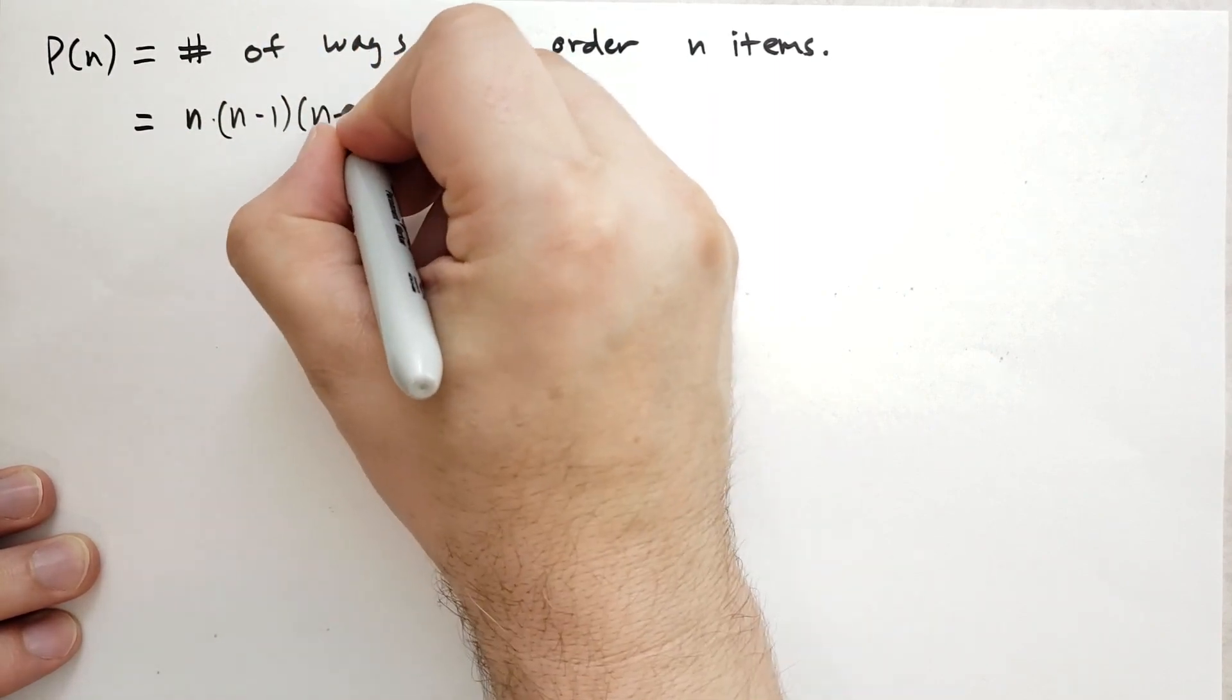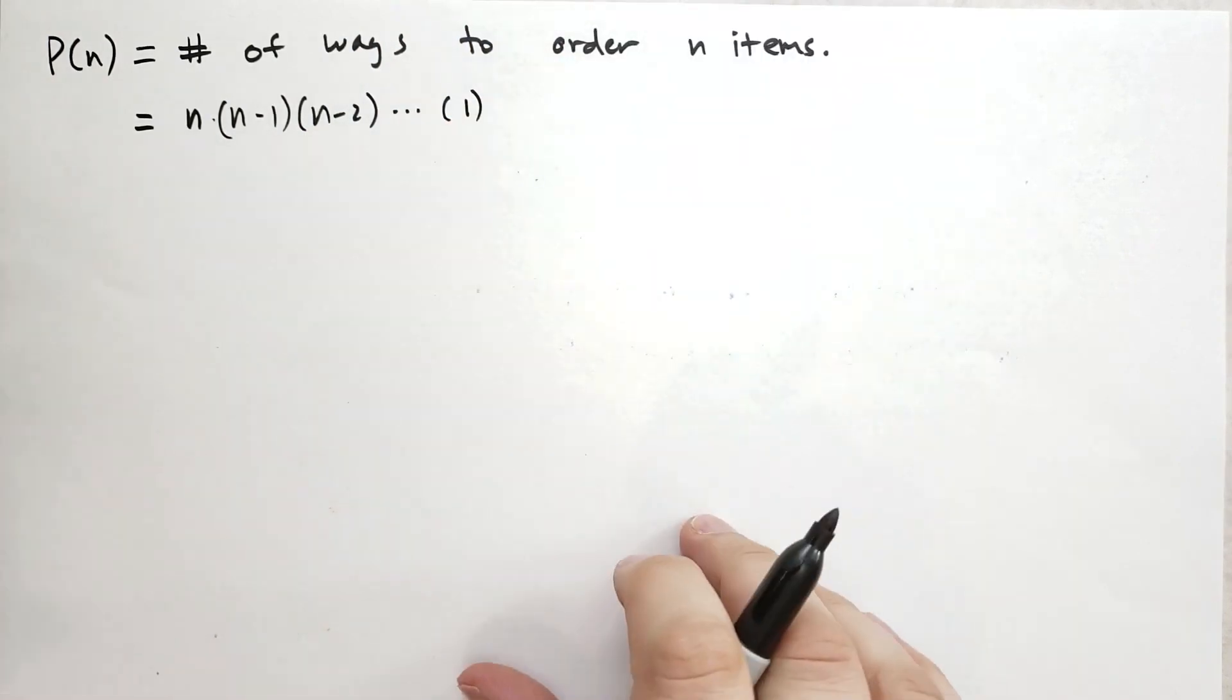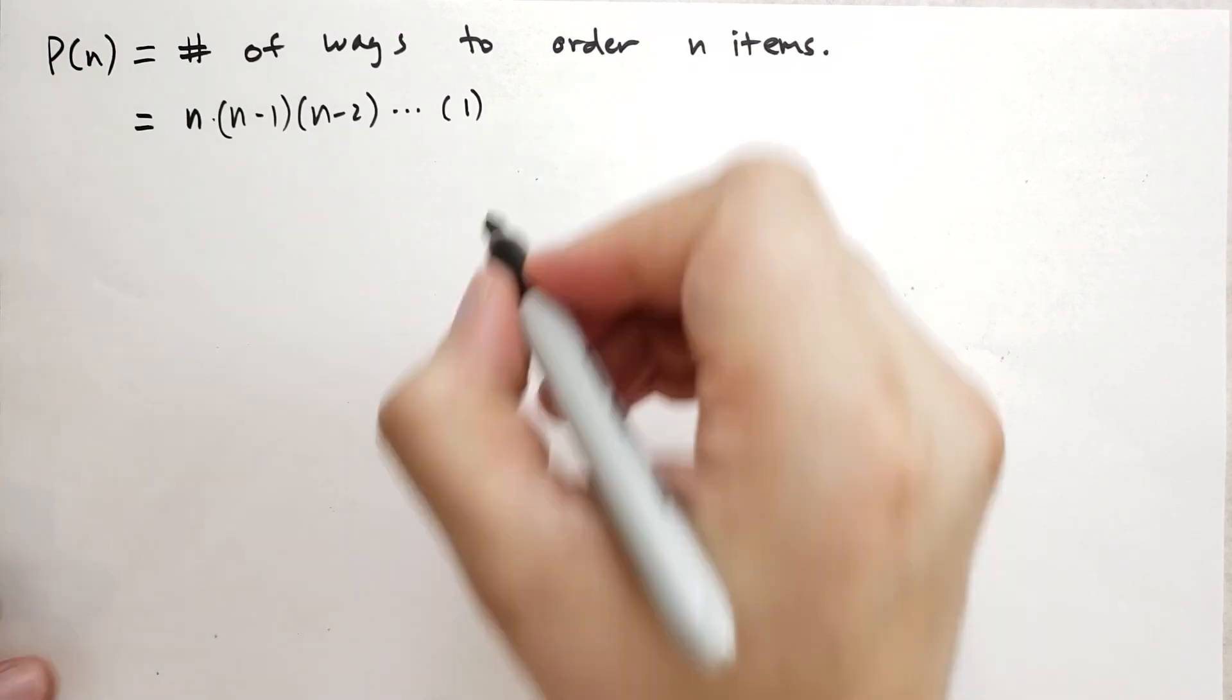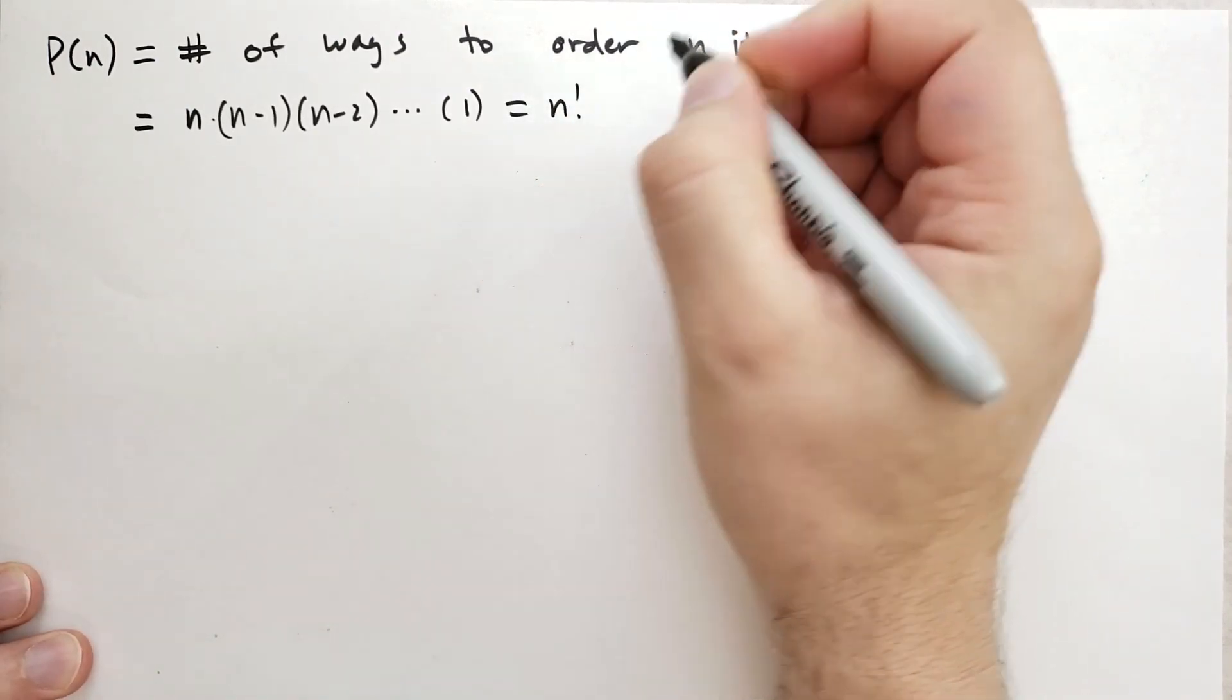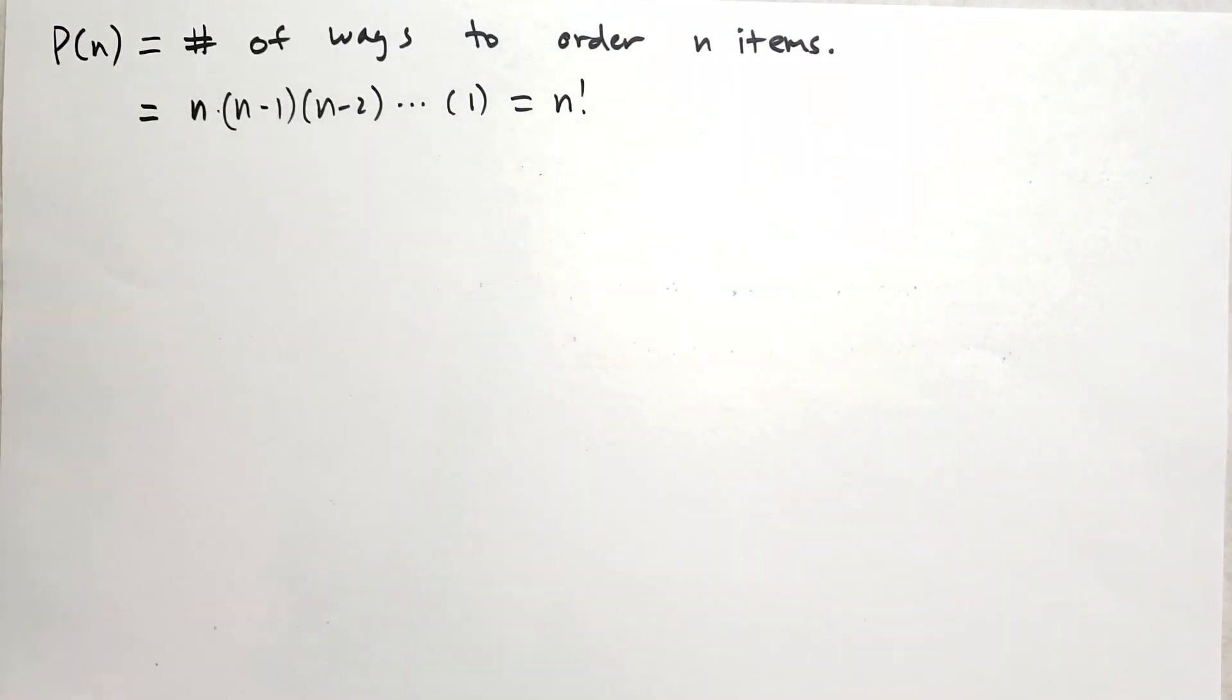And then the second one can be any of N minus one options. And then the third N minus two, and so on, all the way down to the last option, which is basically given to you. You don't have a choice anymore by the time you get to the end of the list. And so this we know as the factorial function. And so anytime you see a factorial, think of permutations of N items.